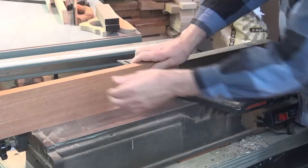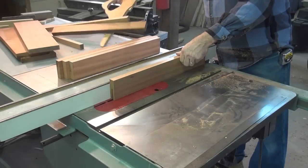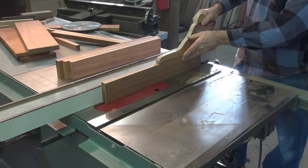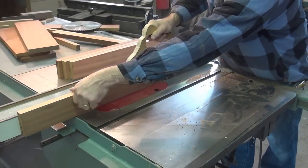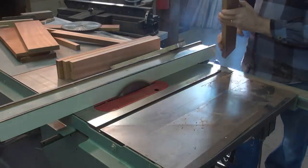After I joint the edge and rip it to size I put a thin curved saw blade on a table saw to resaw the boards in half and then it's back to the thickness planer to make them quarter inch thick.